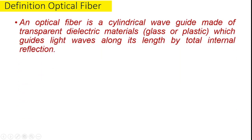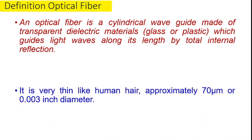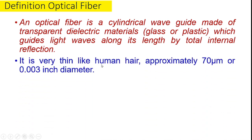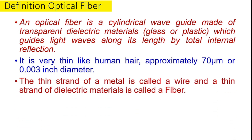An optical fiber is a cylindrical wave guide made of transparent dielectric materials — glass or plastic — which guides light waves along its length by total internal reflection. Optical fiber एक ऐसी cylindrical wave guide होती है जो dielectric material जैसे glass और plastic से बनी होती है, और इसके through हम light waves को total internal reflection के principle से guide कर सकते हैं। It is very thin, like human hair — approximately 70 micrometers or 0.03 inch in diameter. A thin strand of dielectric material is called a fiber.